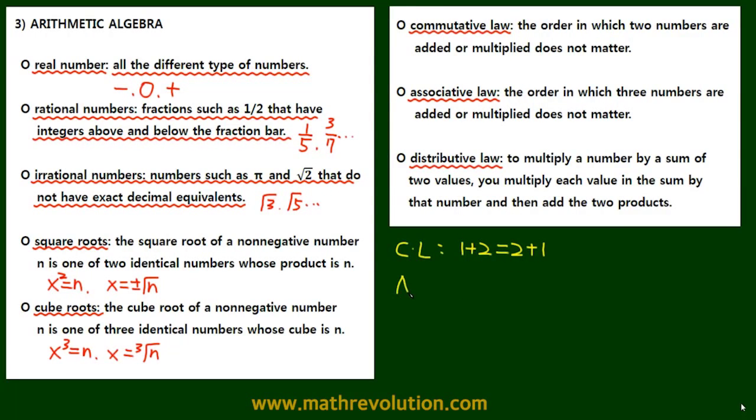An associative law is the order in which three numbers are added or multiplied does not matter. Let's say we have 1 plus 2 plus 3. This will equal 1 plus 2 plus 3.